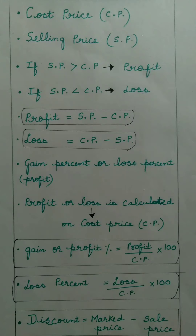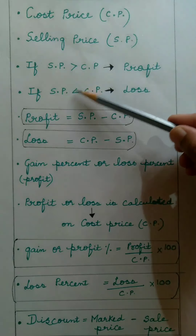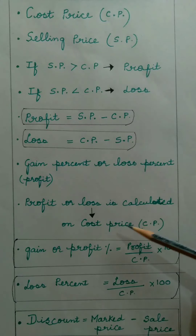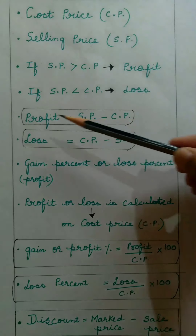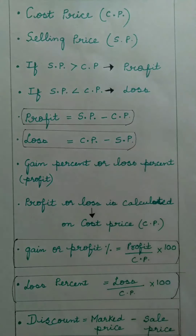To summarize: the buying price of any item is the cost price, and the price at which the shopkeeper sells an item is the selling price. If selling price is greater than cost price, it is a profit. If selling price is lesser than cost price, it is a loss. Profit equals selling price minus cost price, and loss equals cost price minus selling price.